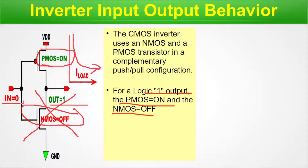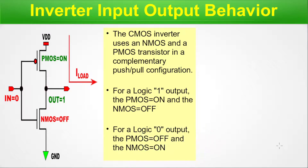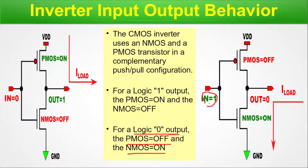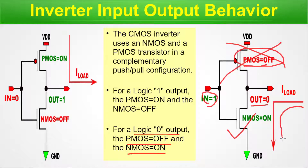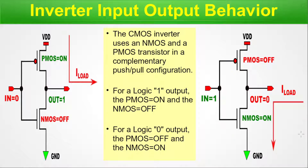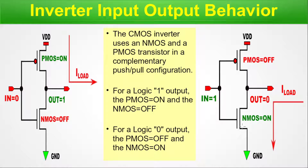For a logic zero output, the PMOS is off and the NMOS is on — at input we have a one and at output we have zero. The PMOS path is broken and only the NMOS path is working with current flowing through it. This is the basic CMOS operation: the analog MOSFET circuit functions as a digital unit — when input is zero, output is one, and when input is one, output is zero.